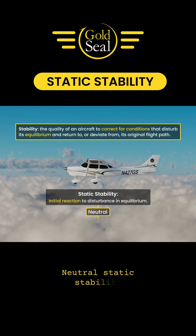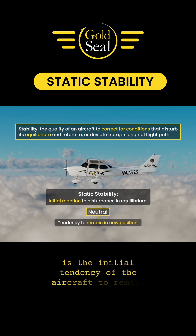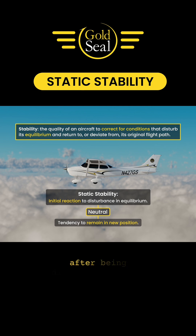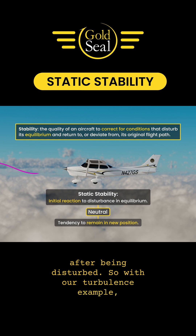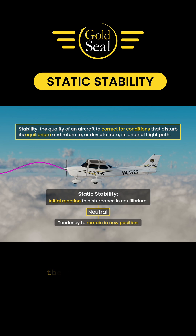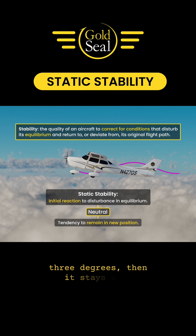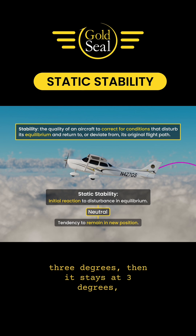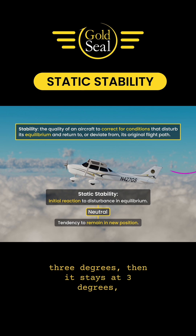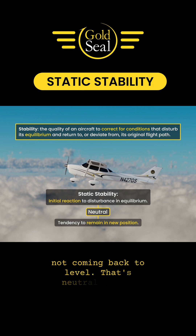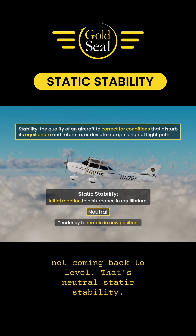Neutral static stability is the initial tendency of the aircraft to remain in its new position after being disturbed. So with our turbulence example, the nose goes up to, say, 3 degrees. Then it stays at 3 degrees, not coming back to level. That's neutral static stability.